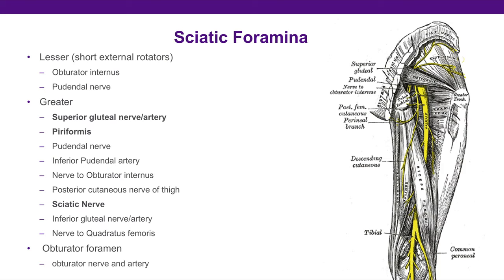This is probably important and testable. The important structures in the lesser sciatic foramen are the obturator internus and the pudendal nerve. In the greater sciatic foramen, you can find the superior gluteal nerve and artery, the piriformis muscle, the sciatic nerve, and a few other structures. In the obturator foramen, you can see the obturator nerve and artery.